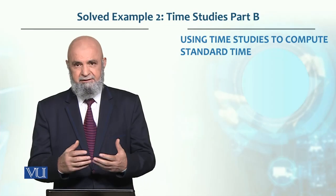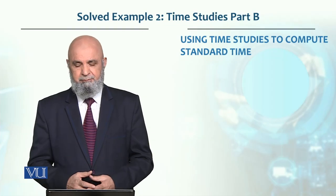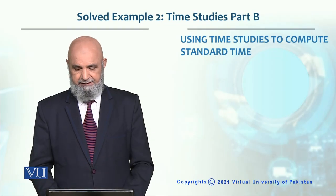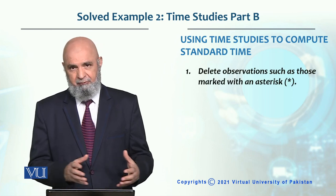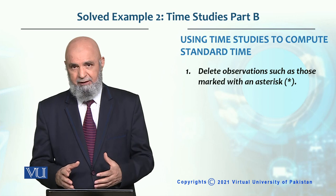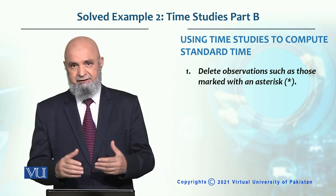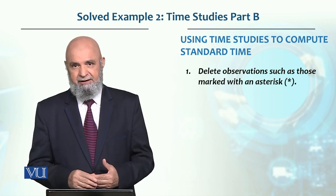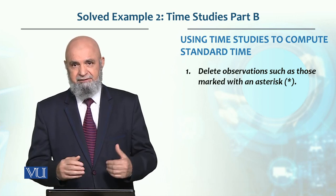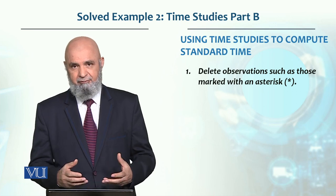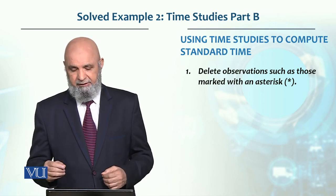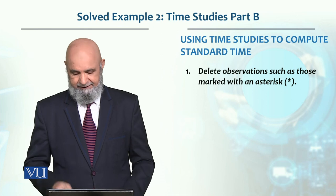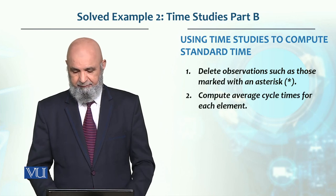Now let's solve this problem. We have to delete certain observations — the first element had an outlier in the first observation and the third element had one in the last observation. We have to remove those calculations. So first we have to do this step.